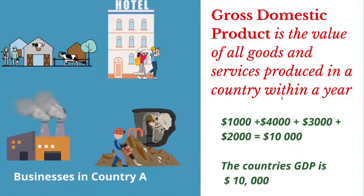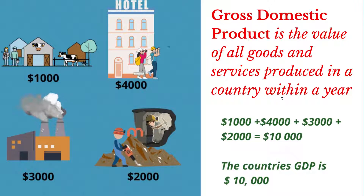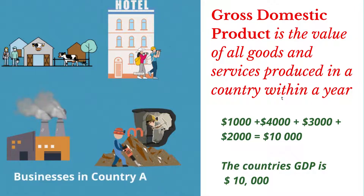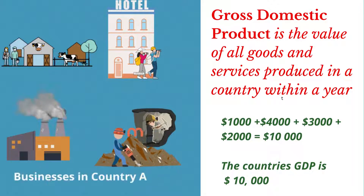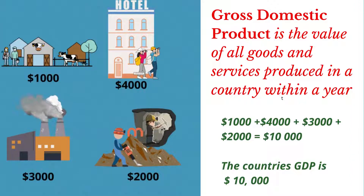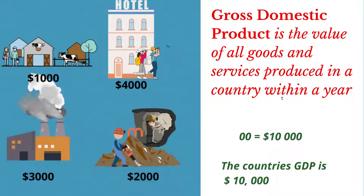When we add up the money value of the goods and services produced by all four industries, we get $10,000, which gives us the GDP of country A.